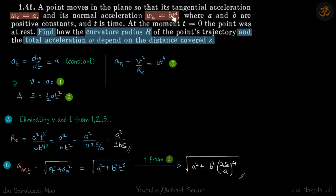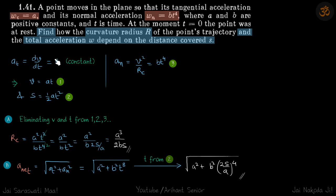To recap: because one acceleration was given in terms of time, we wrote the other one also in terms of time, and by integrating — or directly writing the equations of motion since acceleration is constant — we got two equations. From these we eliminated velocity and time to get radius of curvature, and for total acceleration we eliminated time using the displacement equation. We can also derive these by integrating dv = a dt and then writing v = ds/dt and integrating again, but since it is uniformly accelerated motion we wrote the equations directly.